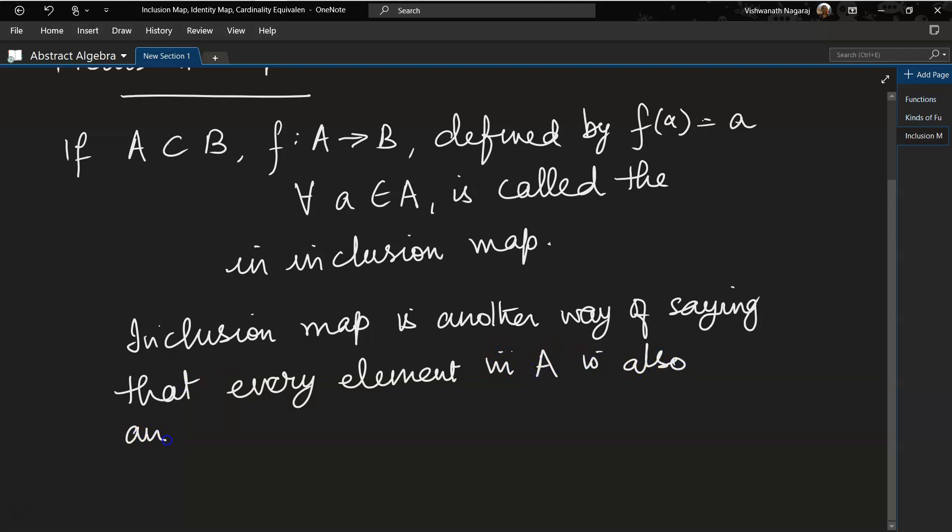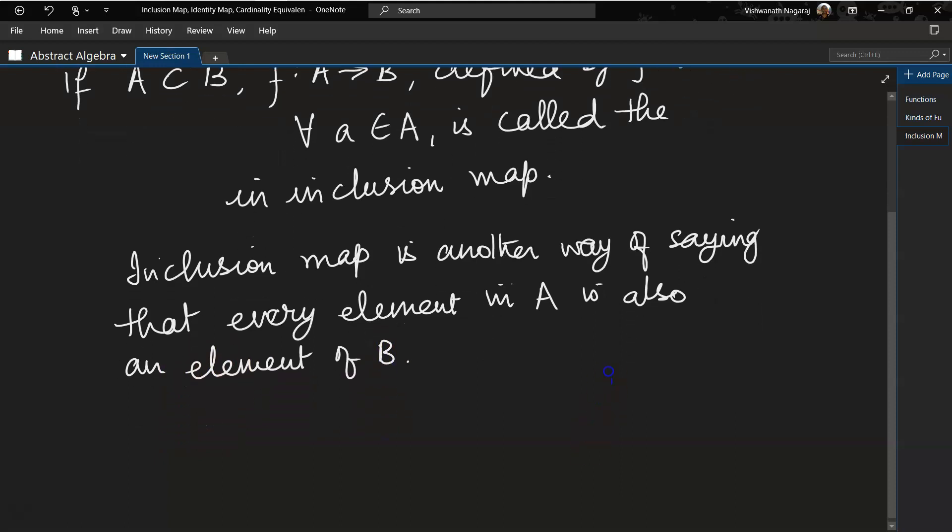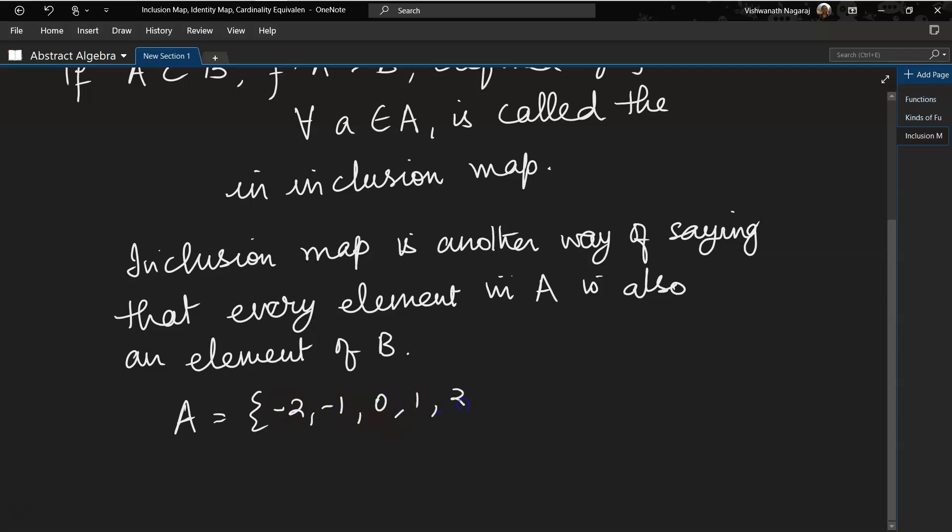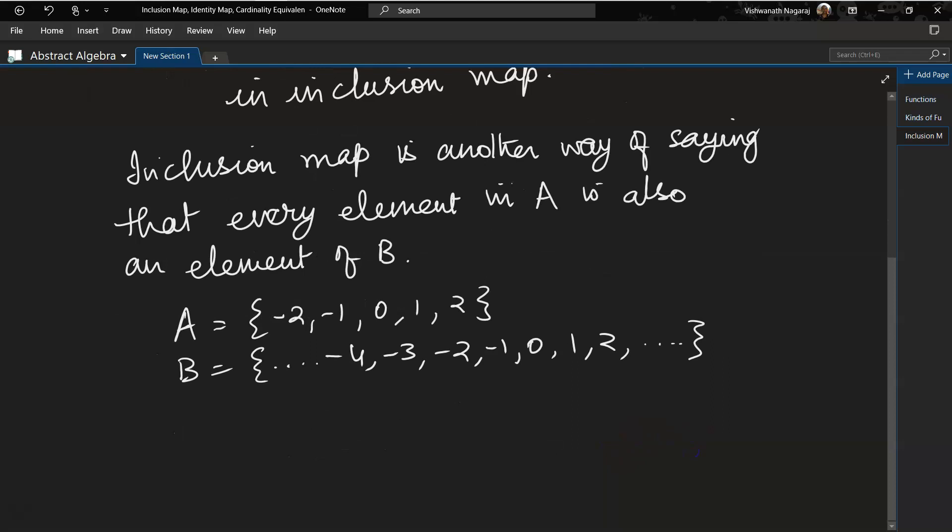Now let's look at an example. Let's say we have a set A equals {-2, -1, 0, 1, 2} and we have a set B which is {-4, -3, -2, -1, 0, 1, 2, ...} we could make it an infinite set also by putting dot dot dot. So we have these two sets.